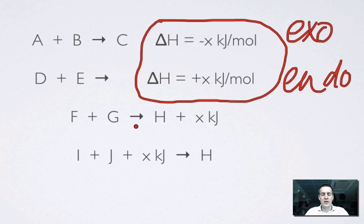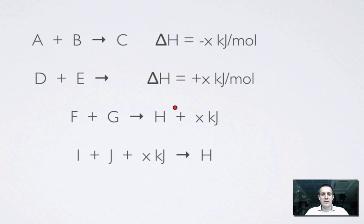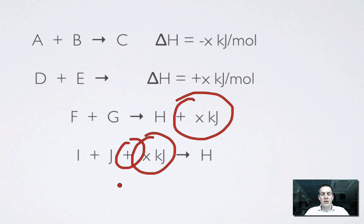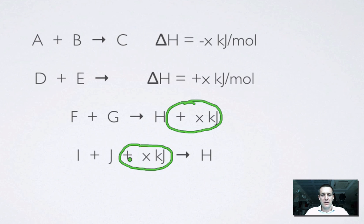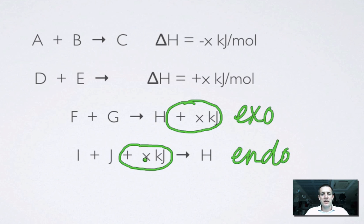Now, if you notice in these two equations here at the bottom, it looks like in both cases we've got a positive amount of energy. So what do we do here, because these two aren't both endothermic? If we look at the difference between these two equations, in the first equation we've got x kilojoules on the right-hand side as a kind of product of the reaction; here it's on the left as a kind of reactant. So in this reaction we're being told that F and G turn into H and some energy is released — this one is exothermic. And in the other one, I and J require some energy to be added before they can turn into H, so this is endothermic. People can get used to the positive and negative idea and then see plus energy in an equation and always assume it's endothermic, but it depends whether it's a reactant or a product.